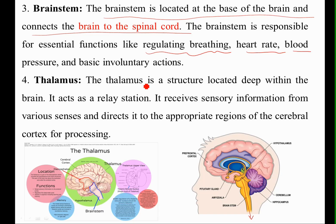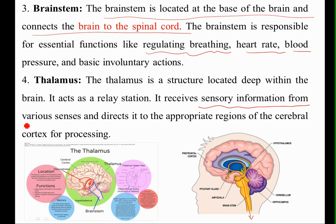The thalamus is a structure located deep within the brain. It acts as a relay station. It receives sensory information from the various sense organs and directs it to the appropriate region of the cerebral cortex for processing.